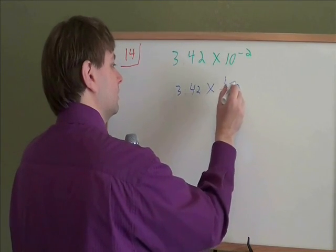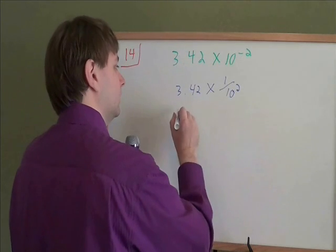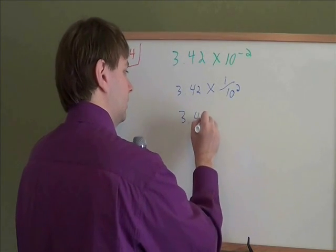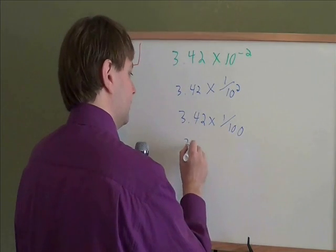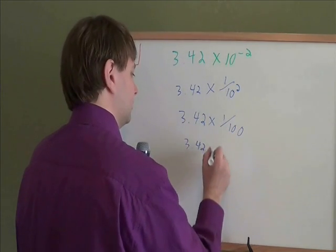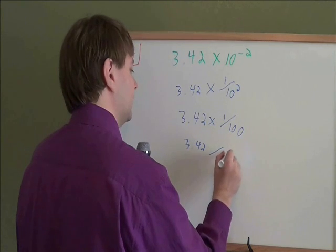1 over 10 to the positive 2. And then 1 over 10 to the 2, well, 10 times 10 is 100. So we basically have 3.42 times 1 won't change it. We have 3.42 divided by 100.